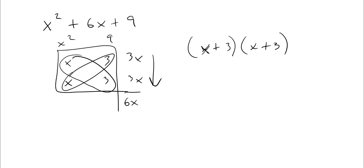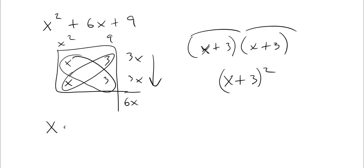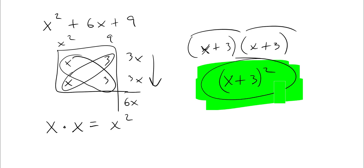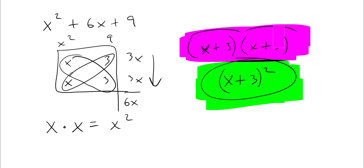So the only thing I'm going to ask you guys to do now is when this is the same — notice this is the exact same thing — it's x plus 3 and x plus 3. You need to write this as x plus 3 quantity squared. Just like x times x is x squared, not 2x. So x plus 3 times x plus 3 is x plus 3 squared. That is the only thing you need to know for this part of the lesson: your final answer is x plus 3 quantity squared if you have the same terms.